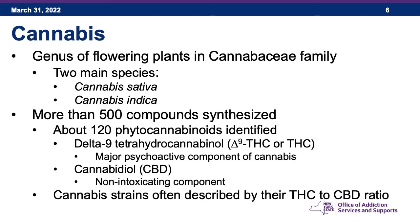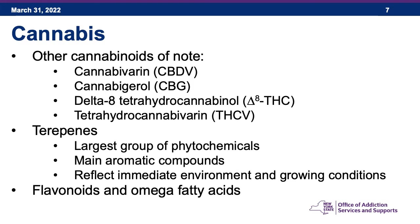Cannabis strains are often described by their THC to CBD ratio. There are other cannabinoids of note: cannabidivarin, or CBDV, has no psychoactive properties but is being investigated as an anti-seizure medication. Cannabigerol, or CBG, has been shown in animal models to suppress nausea and vomiting, and it may also reduce inflammation and stimulate appetite, making it another compound of interest for medications.